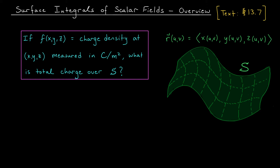Now you might be thinking: why would I want to integrate over a curved surface? Well, here's a motivating example that's going to lead us to a definition. Suppose that f(x,y,z) represents the charge density at a point (x,y,z) measured in coulombs per meter squared. Maybe we have some sort of an electric blanket that has electric charge running through it, and at every point (x,y,z) this function tells us the charge density. We want to know: what's the total charge running through this blanket?